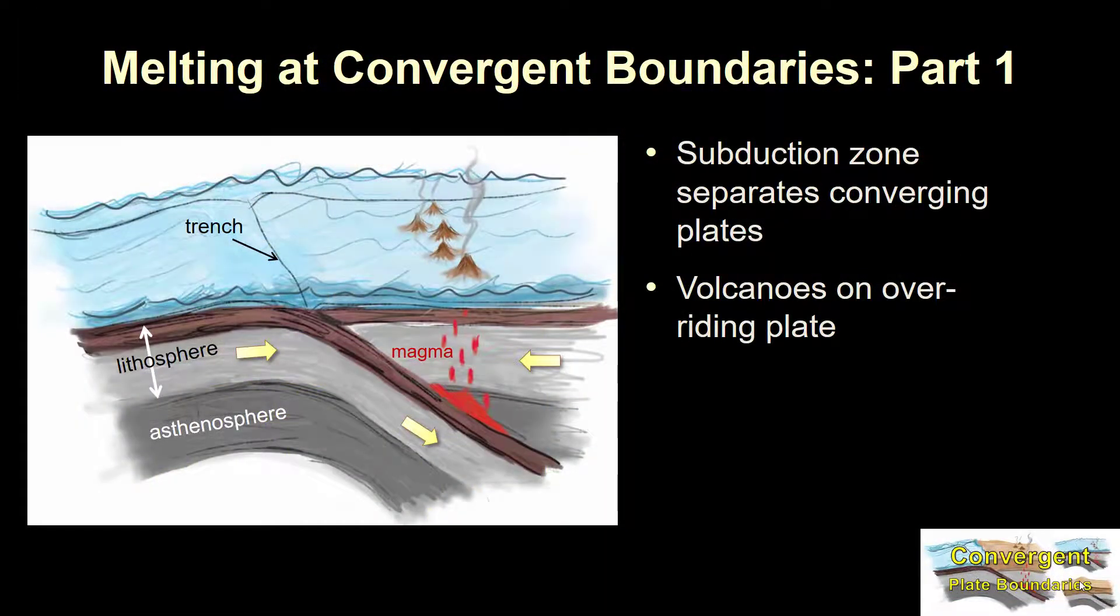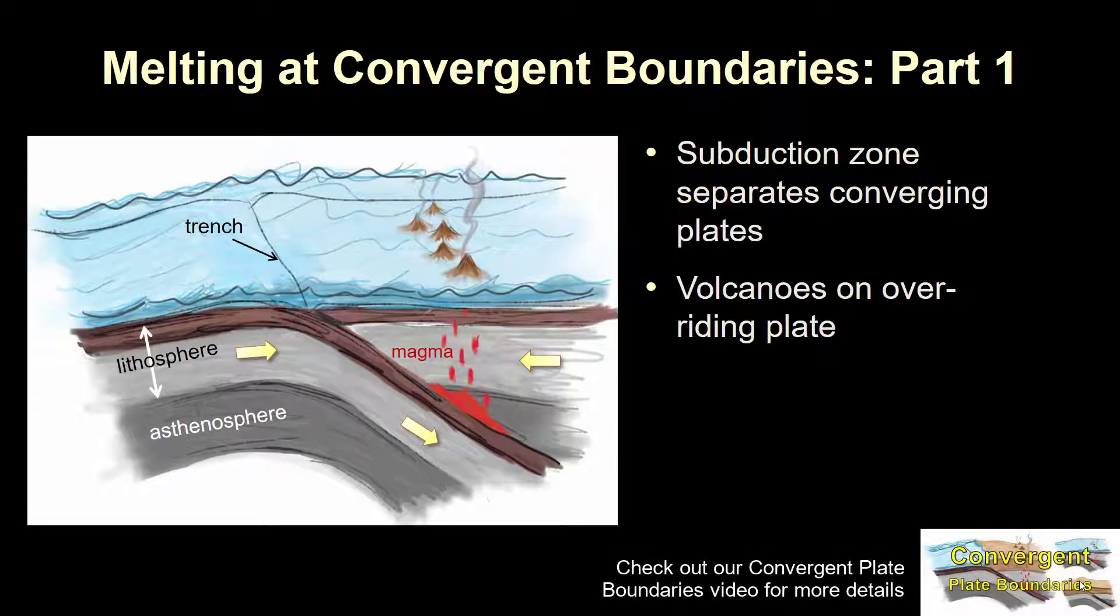Next, let's turn our attention to convergent plate boundaries, where a plate descends into the mantle along a subduction zone. We find volcanoes on the overriding plates, typically in the form of an island arc or volcanic arcs on land. Let's see where this magma comes from.